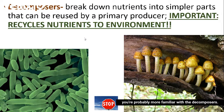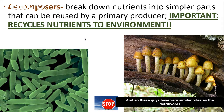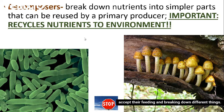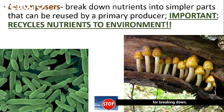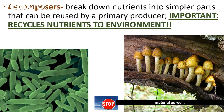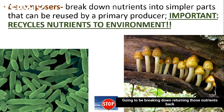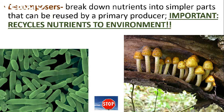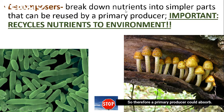Then we have decomposers, which you're probably more familiar with. They have a very similar role to detritivores, except they feed on and break down different things. Typically, bacteria in the ground are responsible for breaking down animal or human remains, and fungi grow on rotting material as well — both returning nutrients back into the environment. Therefore, a primary producer could absorb those nutrients through its roots and use them for growth.